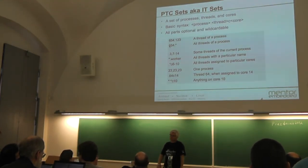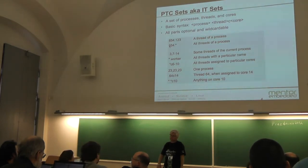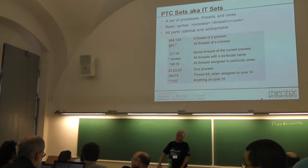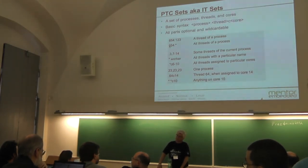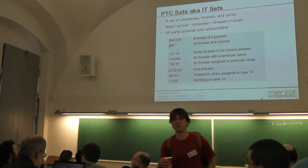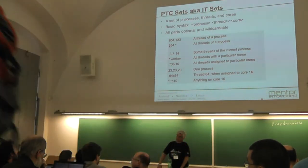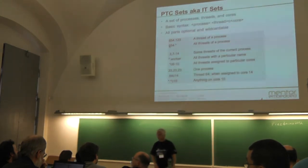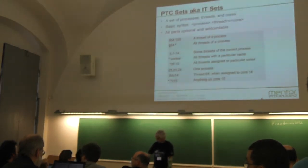If you expand this a bit, you can refer to threads using T instead of C, processes with P attached, and other kinds of objects with other letters. So you could say P1.T3.C1 meaning thread three of process one on core one. By using dot for intersection, you could also say process one dot workers, where workers is a named thread group, meaning all the workers' threads on process one.